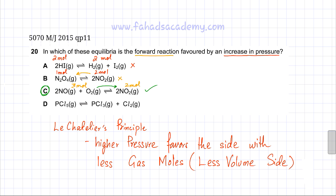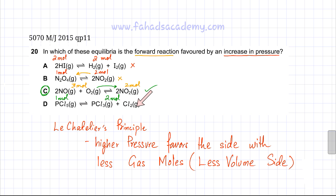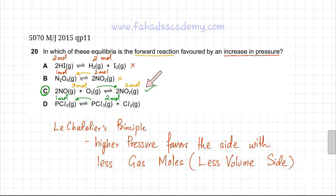We can also check option D to confirm. In option D, there is only one molecule in the reactants — that's 1 mole — and in the products you have 2 molecules or 2 moles: PCl3 and Cl2. Again, if you increase pressure, the side with fewer gas moles would be favored, so it's going to be the backward reaction. Therefore, option C remains the correct option for this question.